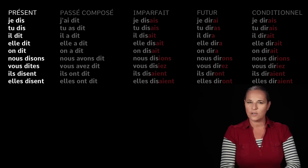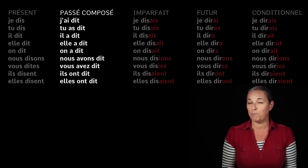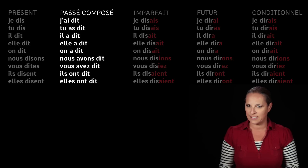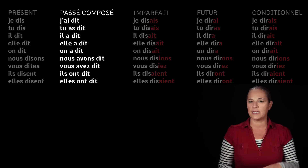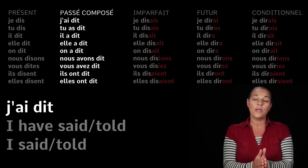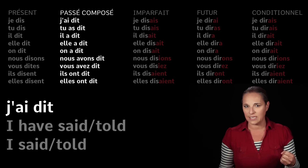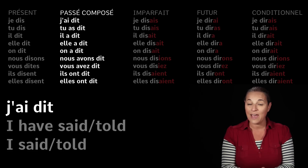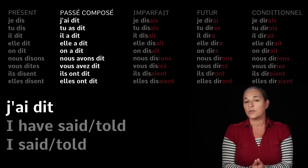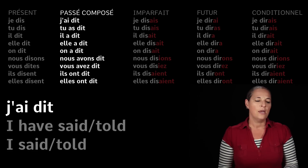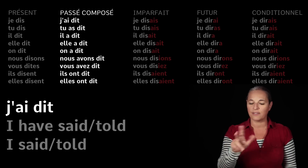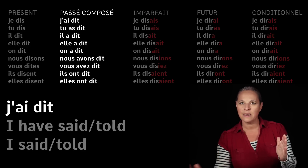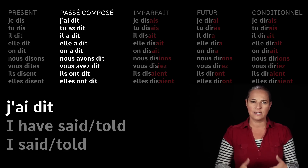Now let's have a look at the passé composé form of dire. In order to conjugate a verb in the passé composé, you need to know how to conjugate the auxiliary verb 'to have' or 'to be' in the present tense. The passé composé is as if I were saying 'I have said' or 'I said'. Dire is conjugated with the verb 'to have' in the passé composé, not 'to be'. You also need to know the past participle of that verb — for dire, it is 'dit', D-I-T.